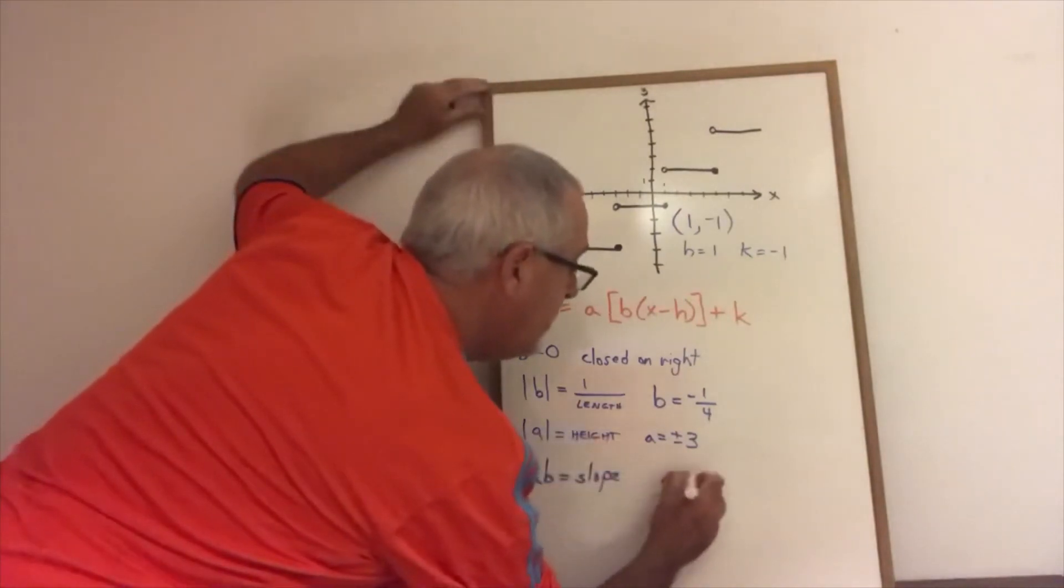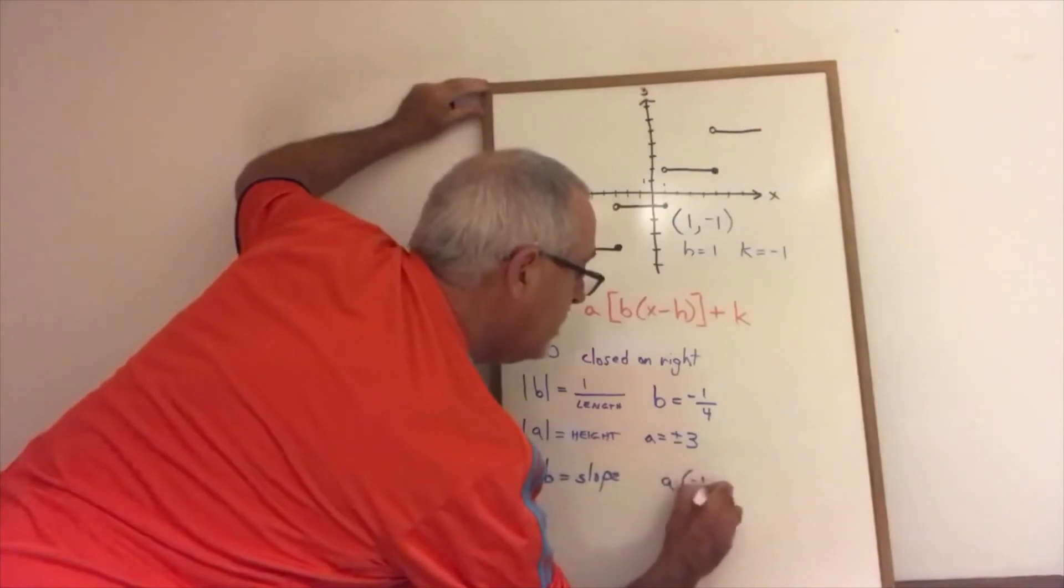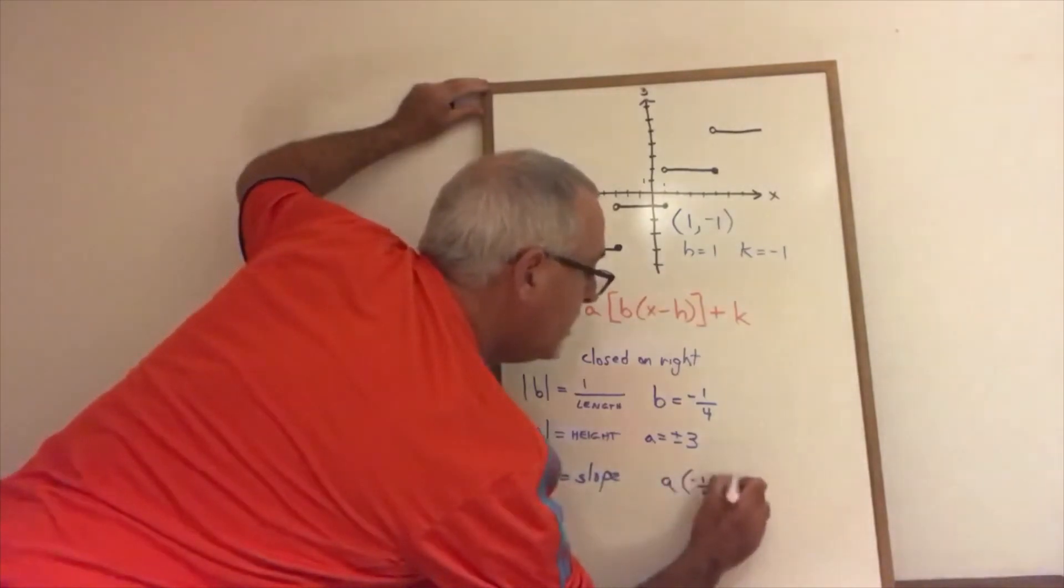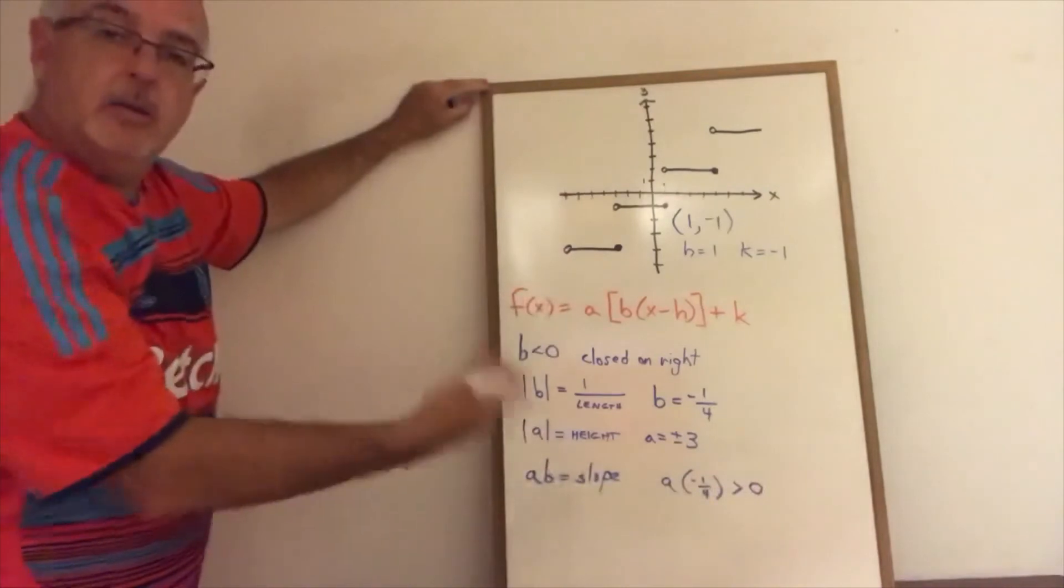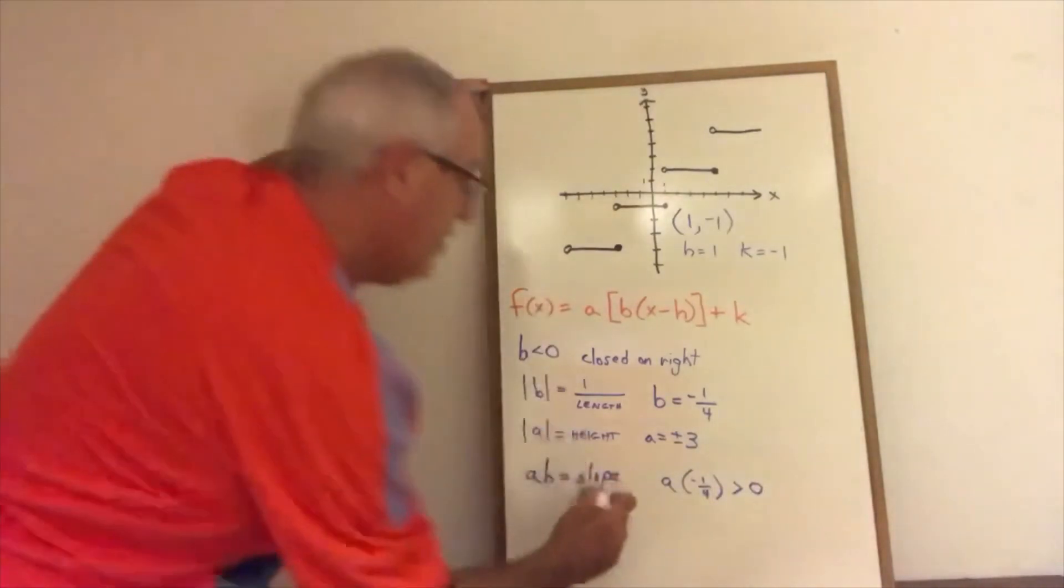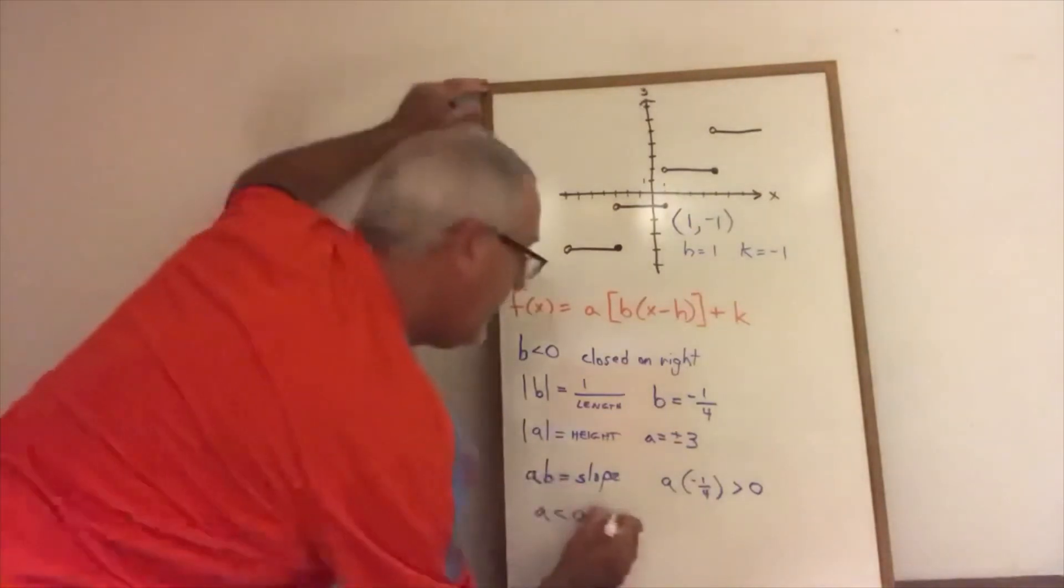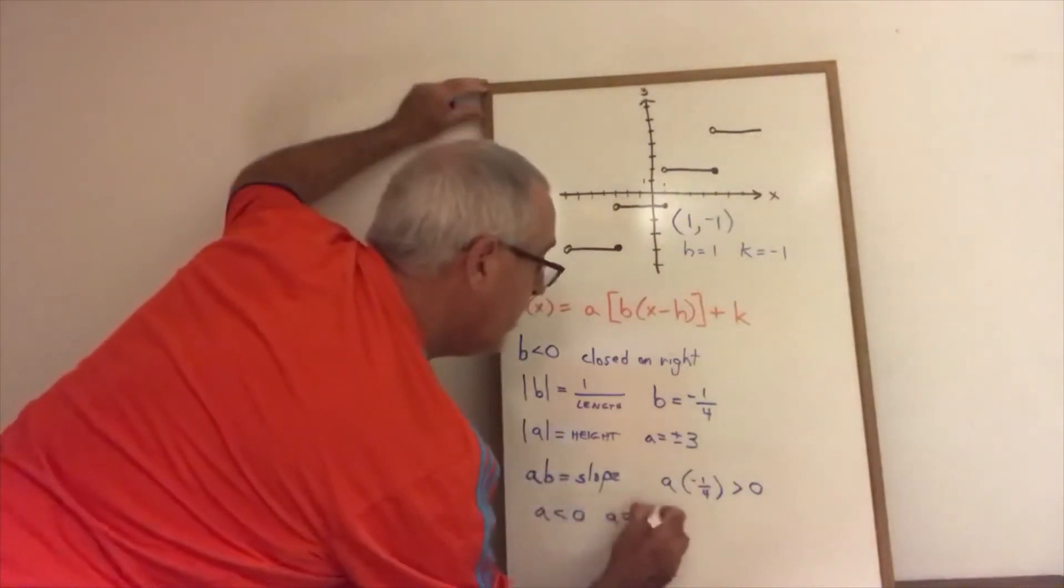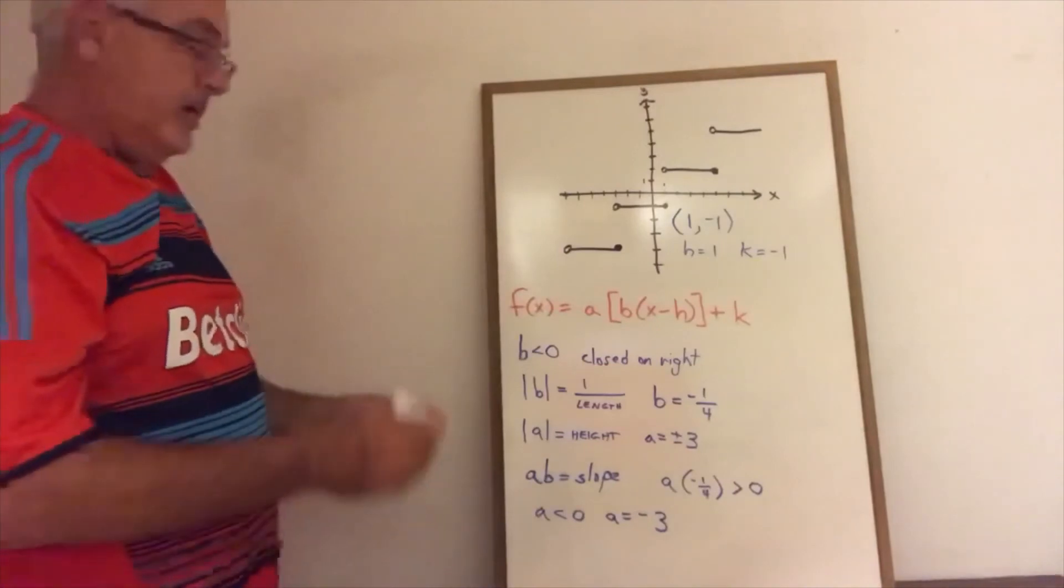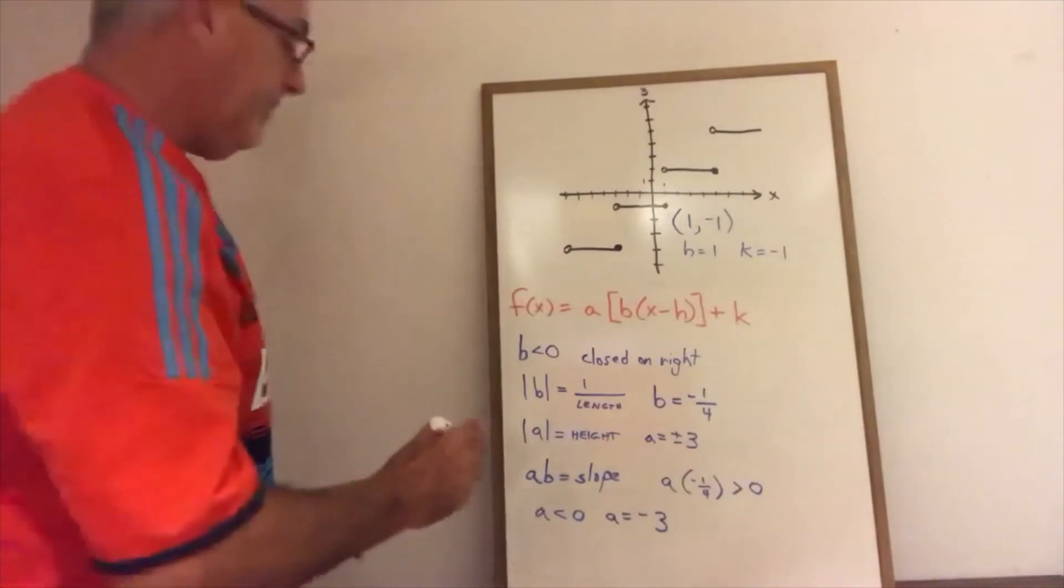Since B is negative 1/4, A has to also be negative. Therefore A is less than 0. This time, A is equal to negative 3. I have everything I need to write out the equation of my step function.